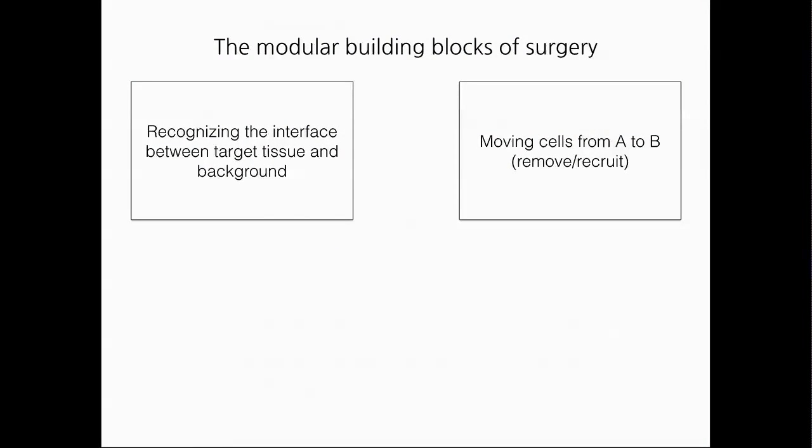The second thing that you have to do, you have to know how to do to make a surgery, is to move cells from A to B. You can either, in the most basic sense, remove a target, you remove your target tissue to the trash, in which case the trash is point B, or you can recruit cells from another place to come and fill in the gap and regrow and regenerate the tissue. So that's also moving cells from A to B.